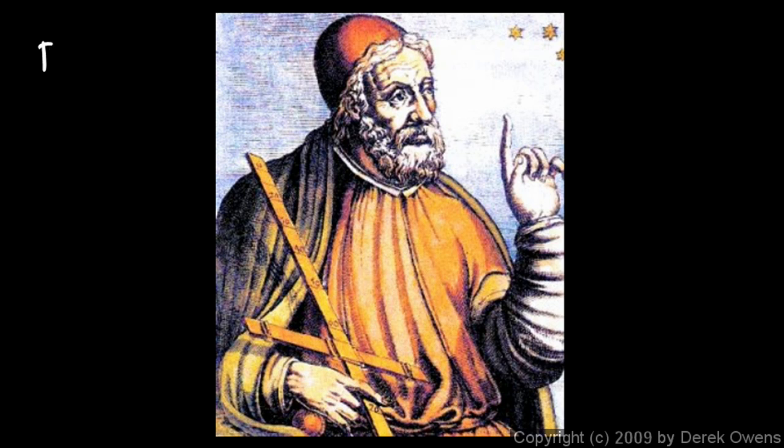This is a picture of Ptolemy, and that's spelled p-t-o-l-e-m-y. The p is silent. It's pronounced Ptolemy. He was an Alexandrian astronomer from around A.D. 150.